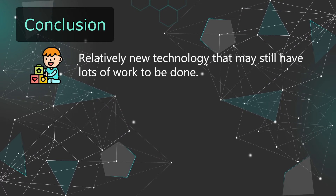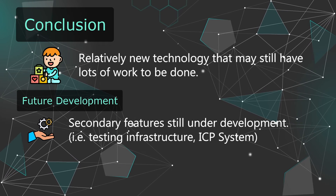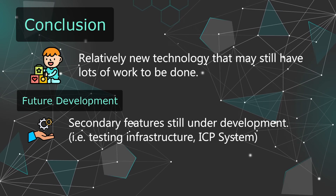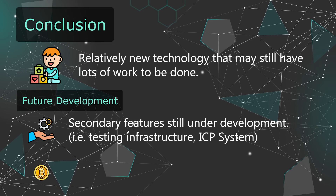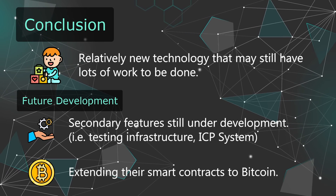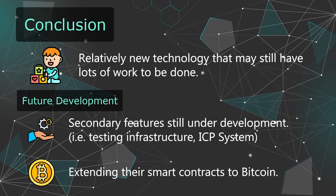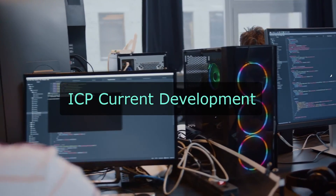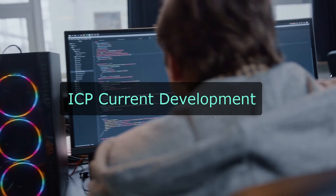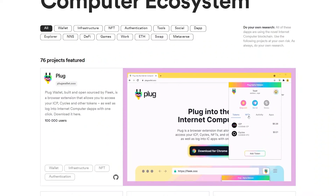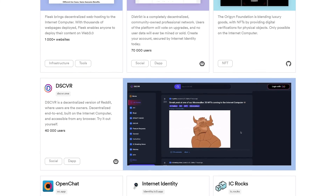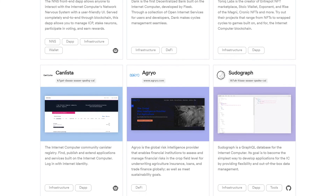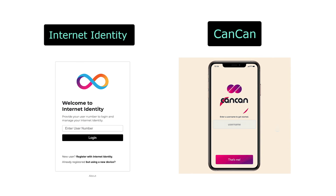It's a relatively new technology that got attention quickly and may have lots of work ahead. Some secondary items will be published later, such as build systems, testing infrastructure, and code that defines the Internet Computer Operating System. They're also extending their smart contracts to Bitcoin, which will give each canister its own Bitcoin public key, allowing these smart contracts to send or receive their own Bitcoin. There's an extensive catalog of the Internet Computer ecosystem, from wallets to social media dApps. Some exciting projects include Internet Identity and CanCan — also known as decentralized TikTok — which could be looked upon.